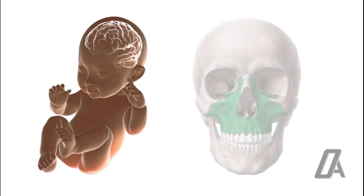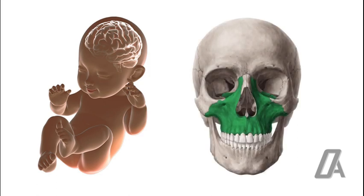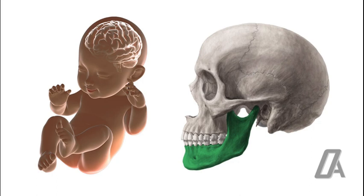Maxilla being closer to head grows faster, and growth is completed before mandibular growth. Mandible being away from the brain grows and growth completes later than maxilla.